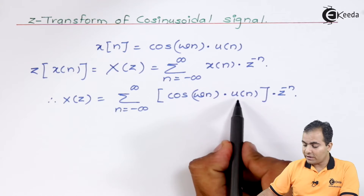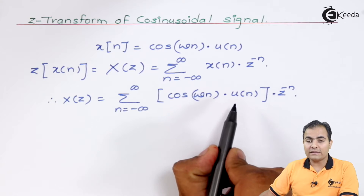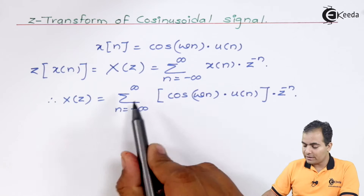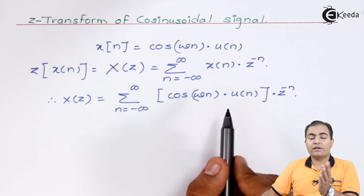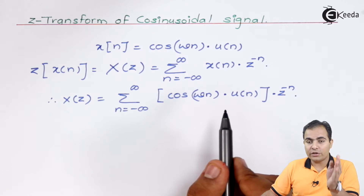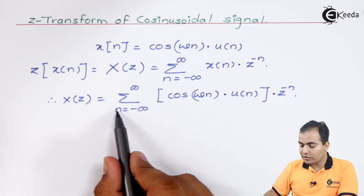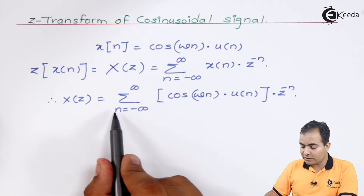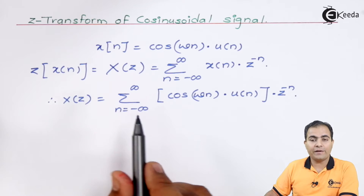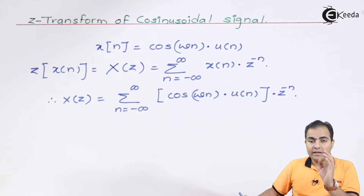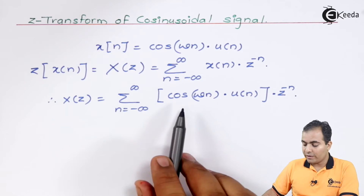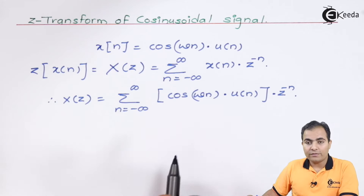Since u(n) exists only on the right-hand side, that is from 0 to infinity, I am going to change the summation value from 0 to infinity. For cos(ωn), we have the Euler formula: cos(ωn) = (e^(jωn) + e^(−jωn)) / 2. I am going to substitute both values into the formula.